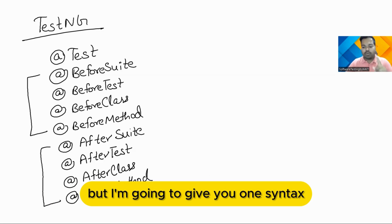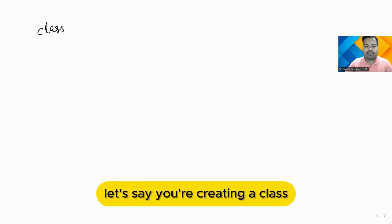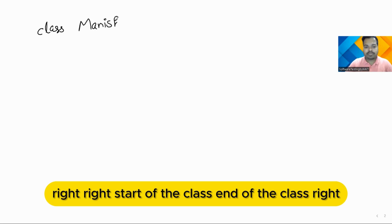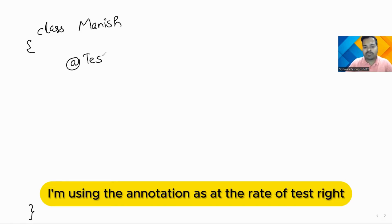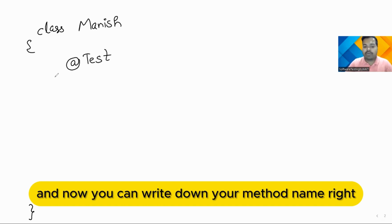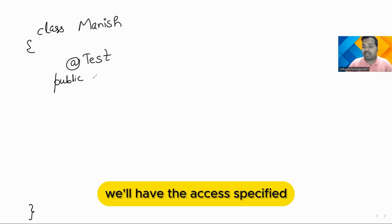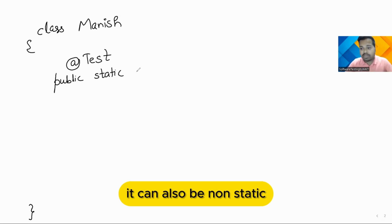Now I'm going to give you one syntax of a TestNG class. Let's say you're creating a class — say your class name is 'Manish' as an example. You have the start and end of the class. You can use the annotation @Test, and now you write your method name. Every method will have an access specifier, so I've written 'public'. The method can also be static or non-static.